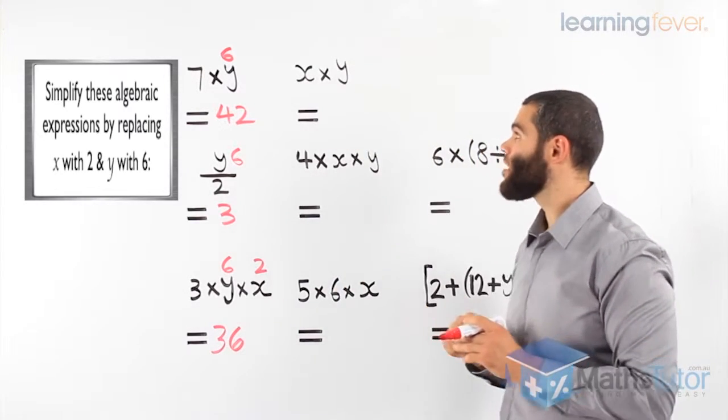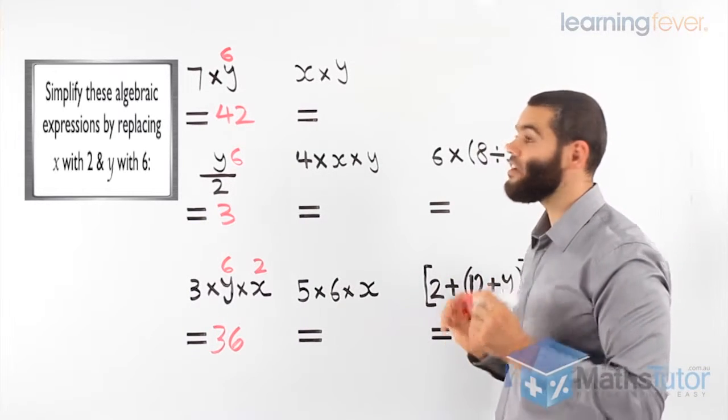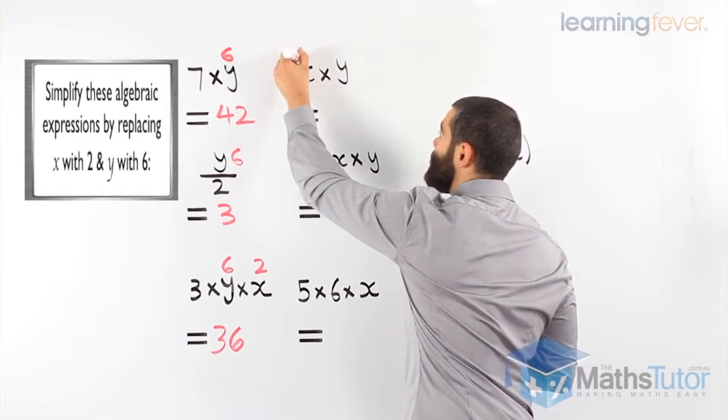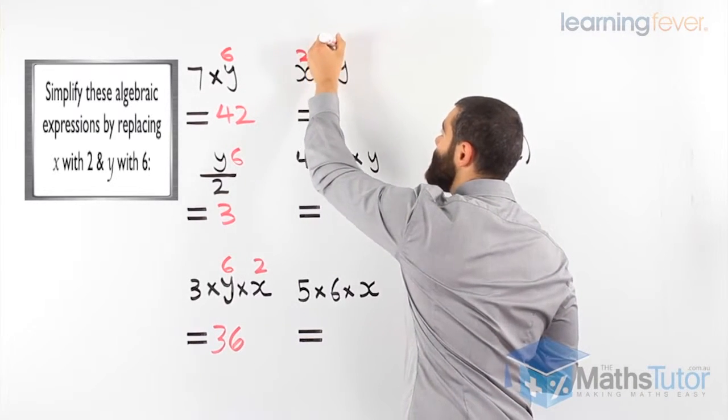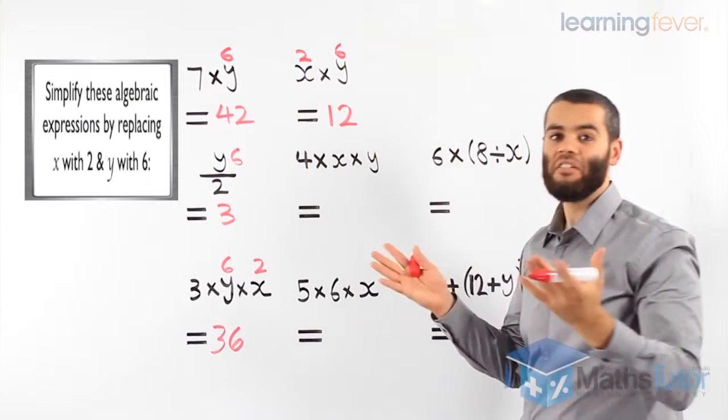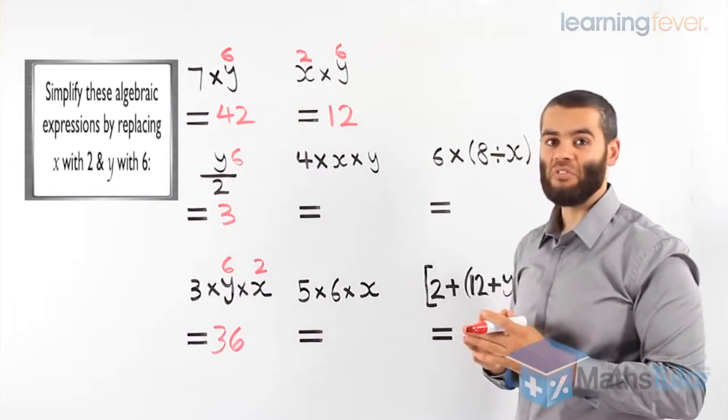Here we have x times y. We know the x is a 2. And we know the y is a 6. So, 2 times 6. Our answer is 12. This is substitution. We're replacing our pronumerals with numerals.